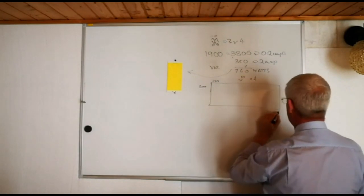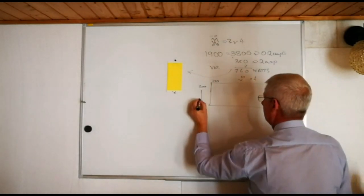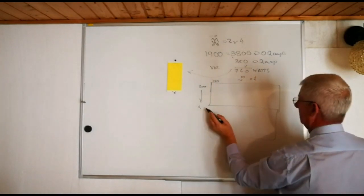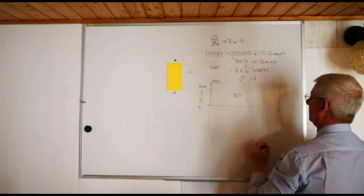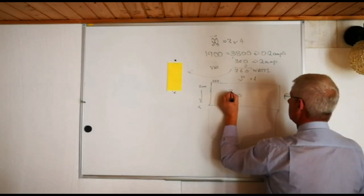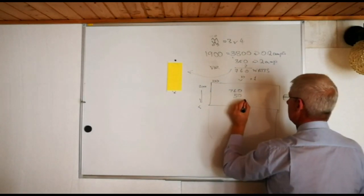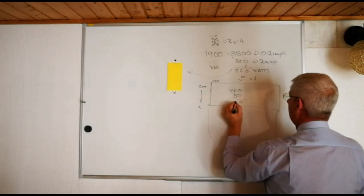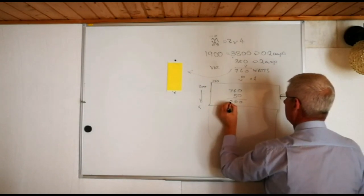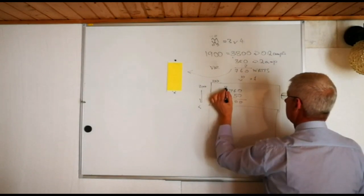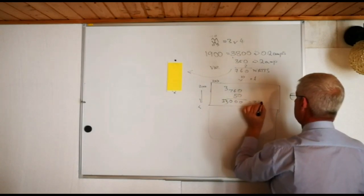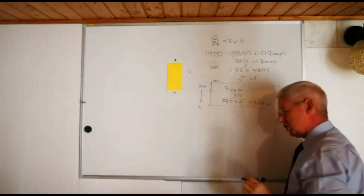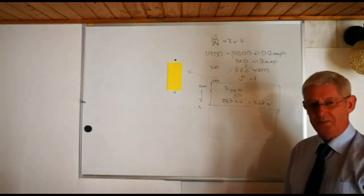So that means for a bigger size, we can have 10 along there, which equals 1 meter, and we can have 5 down here. So we've got 5 times 10 is 50, and 50 times 761, which equals 38 kilowatts per meter.